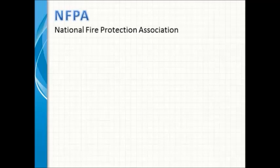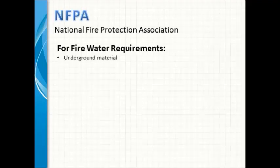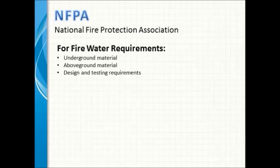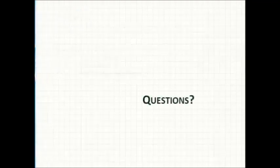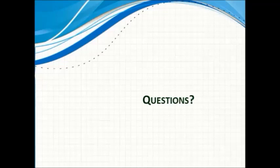The last code is NFPA — the National Fire Protection Association — which is mainly used for fire water requirements. It lists materials for underground and above-ground use, and covers design and testing requirements for fire water systems. With that we've reached the end of this video. In the next video we will talk about piping components in detail — how to describe them and the different component types. Thank you very much.